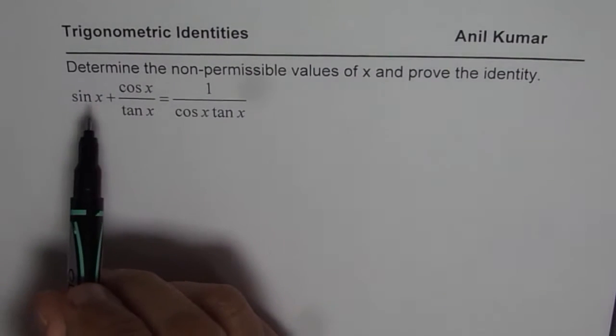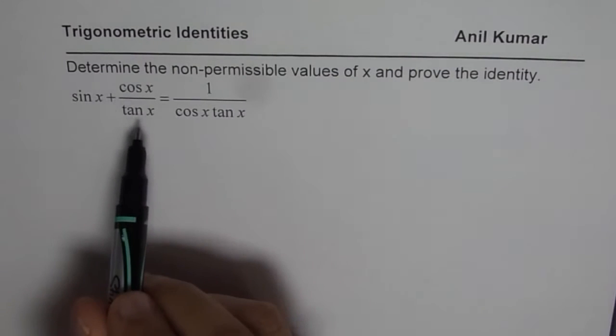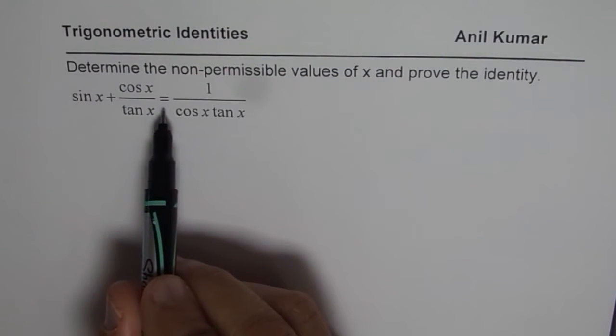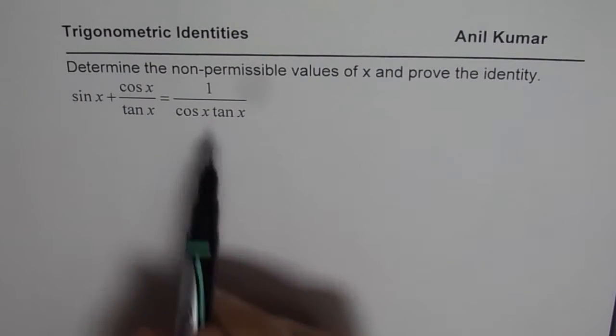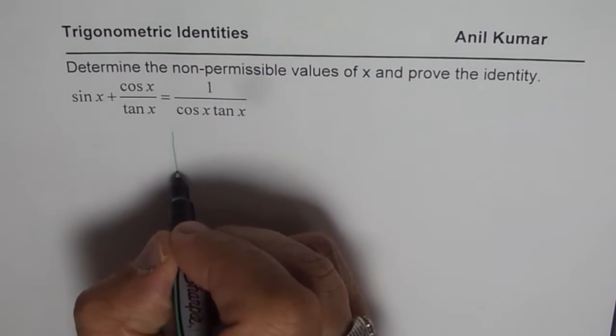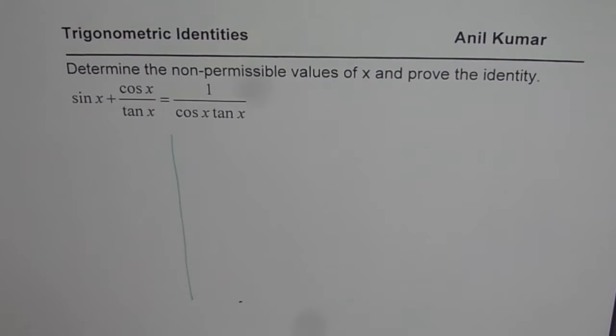Let's look into this identity, which is sin x plus cos x over tan x equals one over cos x tan x. To prove this, we have to prove that left side is equal to right side.